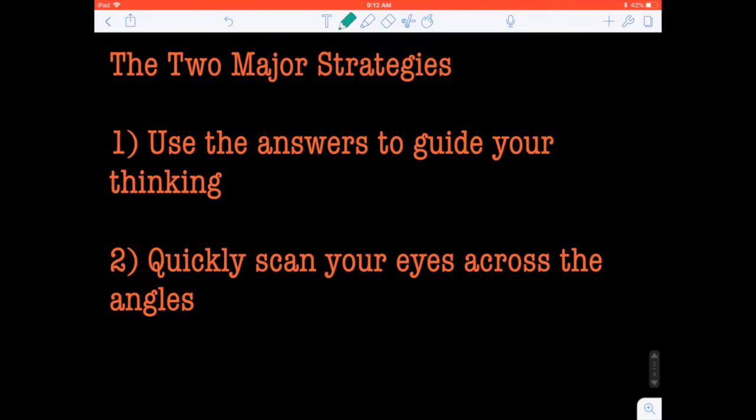Now the second major strategy you're going to use here is to quickly scan your eyes across the angles. The longer and longer you stare at these angles, the more similar they seem, which makes these questions harder and harder. So do not look at these questions for a long time. Quickly scan your eyes between the angles or the two angles in particular that you are looking at, and it's going to seem a lot easier to distinguish the sizes and the degrees of these angles.